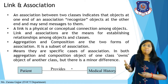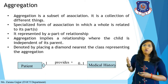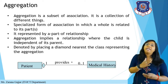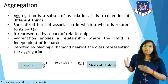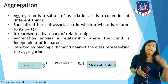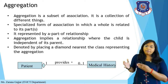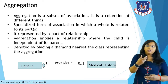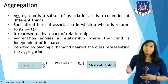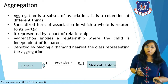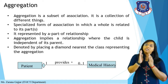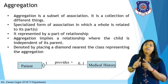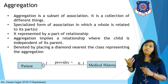Aggregation is a subset of association and a collection of different things — a specialized form of association in which a whole is related to its parts, representing a 'part-of' relationship. For example, a car is a part of a vehicle. Aggregation implies a relationship where the child is independent of its parent. It is denoted by placing a diamond symbol nearest to the class representing the aggregation.